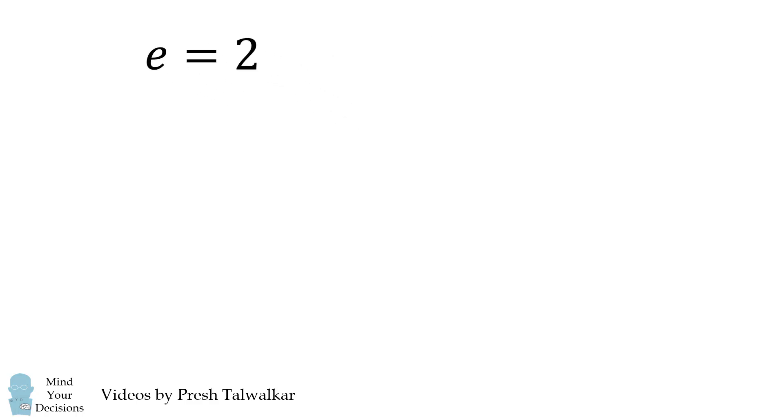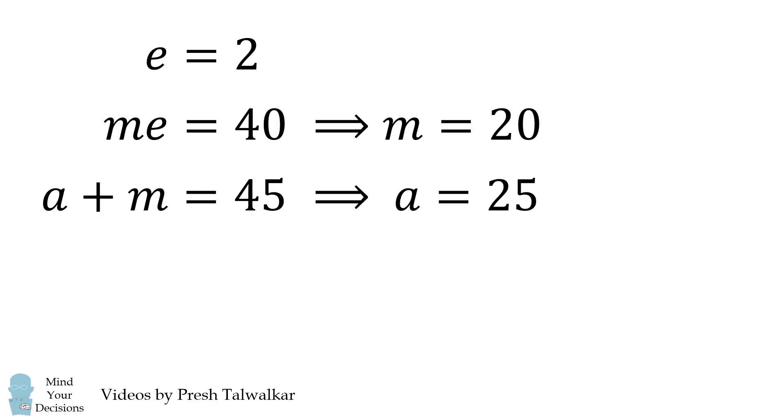From here, we'll be able to solve for the rest of the variables very quickly. From the equation m times e is equal to 40, we can deduce that m is equal to 20. And from a plus m is equal to 45, we can get that a is equal to 25.